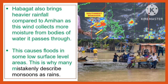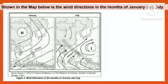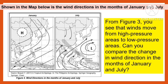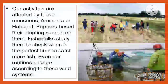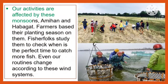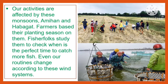This causes floods in some low-surface level areas. This is why monsoons are sometimes mistakenly described as rains. Our activities are affected by these monsoons — the Amihan and the Habagat. Farmers base their planting seasons on them. Fisher folks study them to check when the perfect time is to catch more fish. Even our routines change according to this wind system.